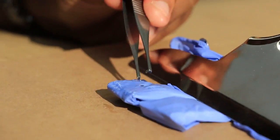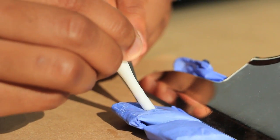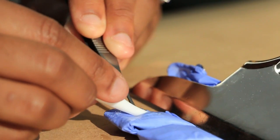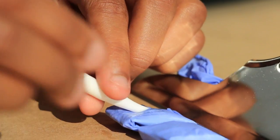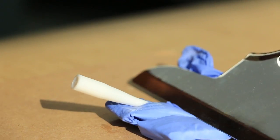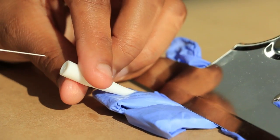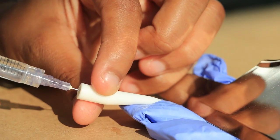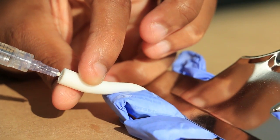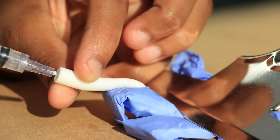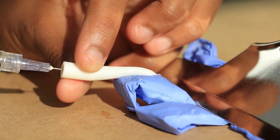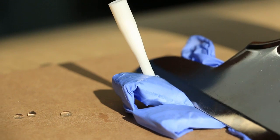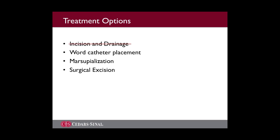After the incision is made, the word catheter is inserted, and the balloon tip is inflated with 2–3 mL of saline solution injected through the hub of the catheter. The inflated balloon allows the catheter to remain within the cavity of the cyst or abscess. The free end of the catheter can be placed in the vagina. If a Bartholin cyst or abscess is too deep, word catheter placement is impractical and other options must be considered.